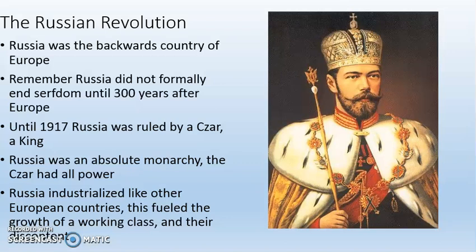Until 1917, Russia was ruled by a czar, which is their word for a king. The czar had all power — Russia was an absolute monarchy. It was really one of only a handful of absolute monarchies still left in Europe in the 20th century.